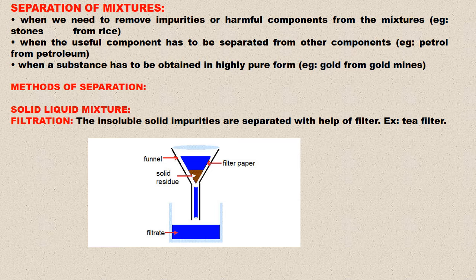Separation of Mixtures. We need to separate mixtures in order to remove the impurities or harmful components from the mixture, when a useful component has to be separated from other components — for example, petrol from petroleum — or when a substance has to be obtained in a highly pure form, for example, gold from gold mines.